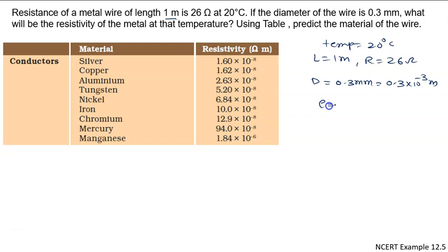What will be the resistivity of the metal at that temperature? We have to calculate the value of ρ (rho), and using the table we have to predict the material of the wire. It could be silver, copper, aluminum, tungsten, or which material is this.